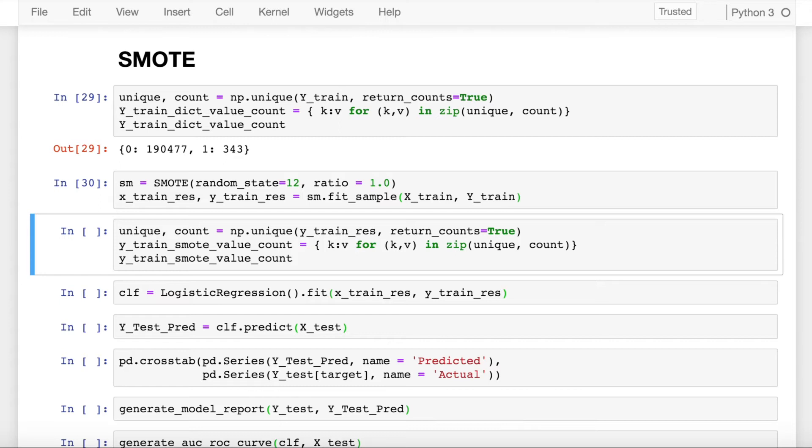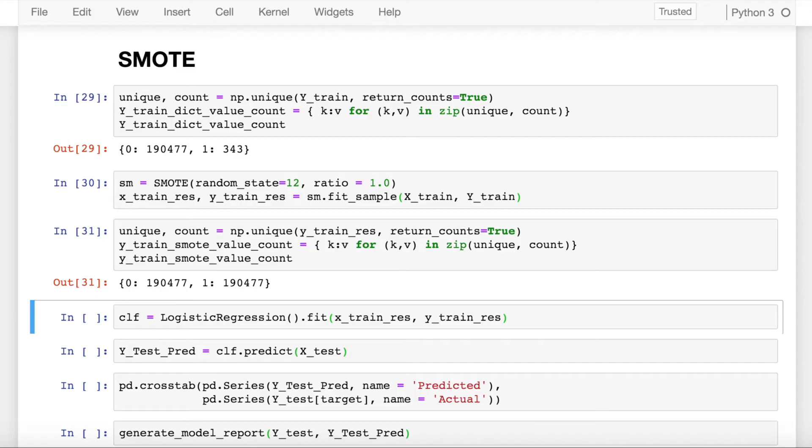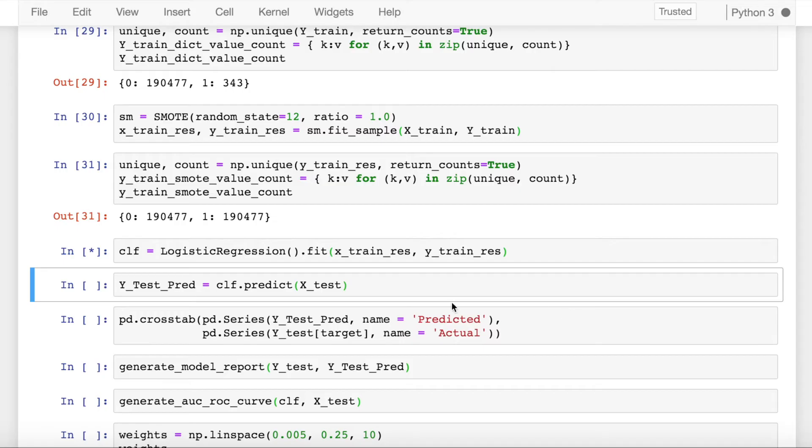So I basically fit the samples that are there in hand and let's see what SMOTE gives me. So as it was evident by the ratio that we chose, we'll have the same number of samples for class 0 as well as class 1. Now let's go ahead and fit our logistic regression model and see the results.